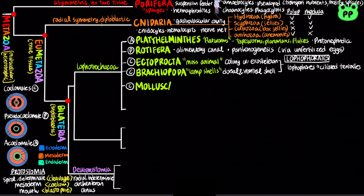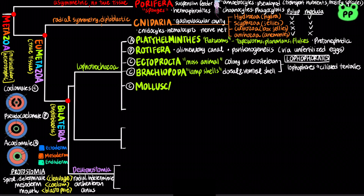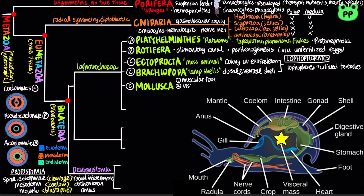The phylum Mollusca are coelomates with soft bodies. They are characterized by a muscular foot usually used for movement, a visceral mass containing most of the internal organs, and a mantle — a fold of tissue that drapes over the visceral mass and secretes a shell in some mollusks.